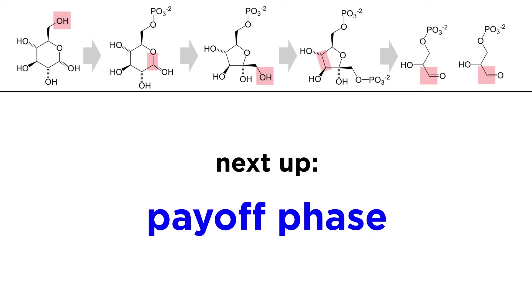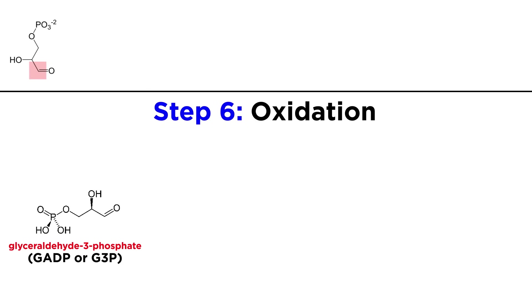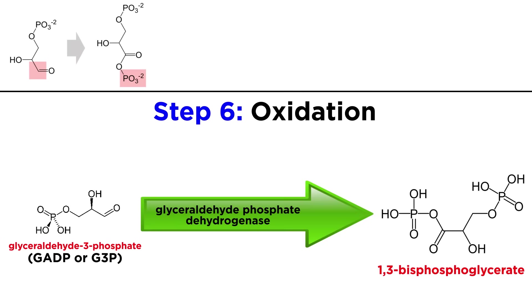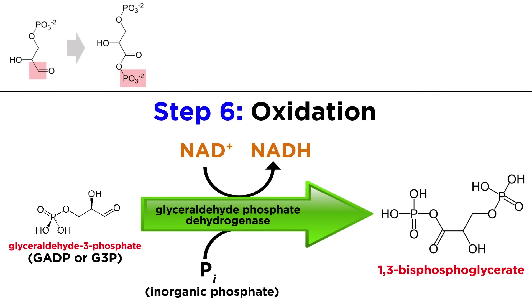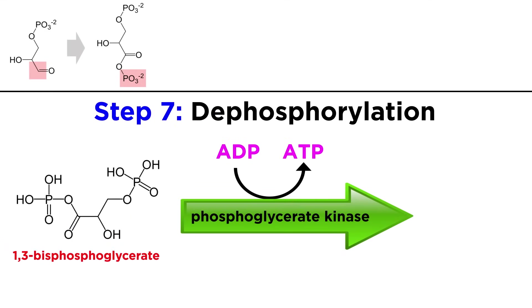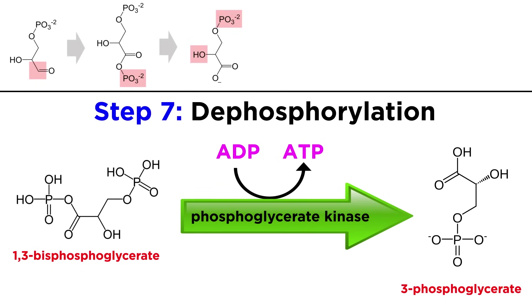Now it's time for the payoff phase. Looking at one of our two GADP molecules from the preparatory phase, the first thing that will happen is an oxidation to become 1,3-bisphosphoglycerate. This requires NAD+ and a free inorganic phosphate to occur, and the enzyme involved is called glyceraldehyde phosphate dehydrogenase. Next, phosphoglycerate kinase will catalyze transfer of a phosphate group to ADP to become 3-phosphoglycerate, producing 1 ATP in the process. Since each of the two GADP molecules will make 1 ATP, that's a total of 2 ATPs for half the total payoff of glycolysis.